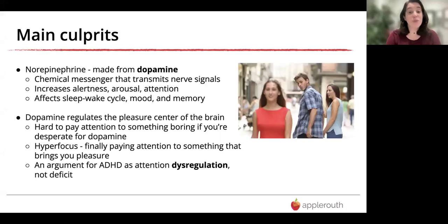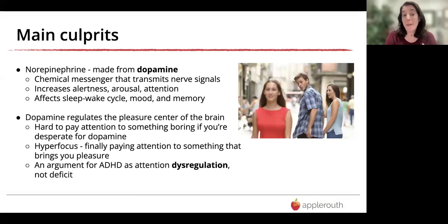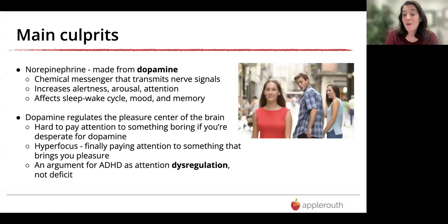The main culprits for ADHD are norepinephrine and dopamine. Norepinephrine is made from dopamine — it's a chemical messenger that transmits nerve signals and can increase your alertness, arousal, and attention. It also affects your sleep-wake cycle, mood, and memory. So if you've ever wondered how someone with ADHD can survive with so little sleep or seems to always be forgetting things, that is part of having ADHD.